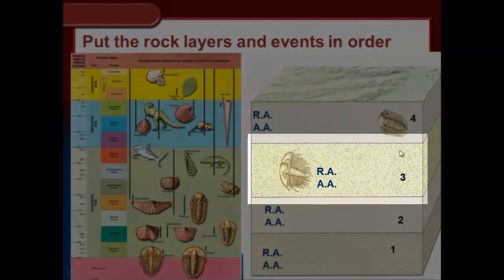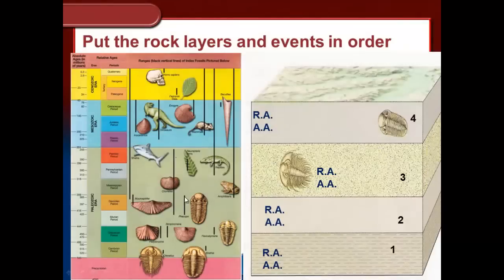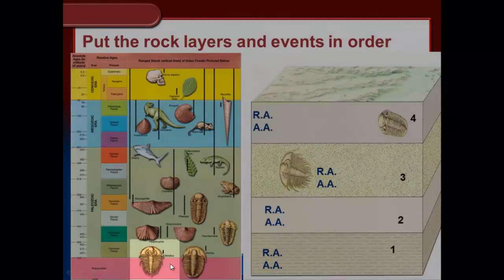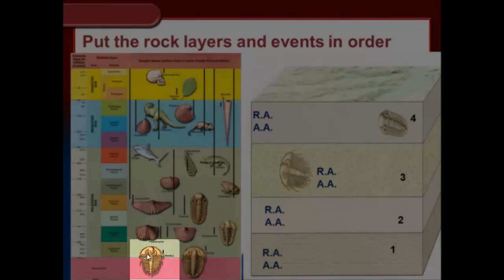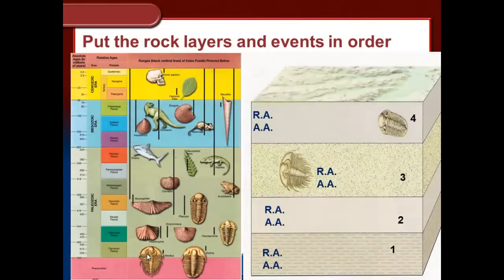Looking at this rock layer — we know it's the third layer to form — inside we have a fossil. Comparing it to the index fossil chart, we can see it's a trilobite. If you've played with the fossils at the front of the room, you can see certain fossils known as trilobites. There are four on this page, and this one is known as Olenellus. That's the fossil found in this rock layer.